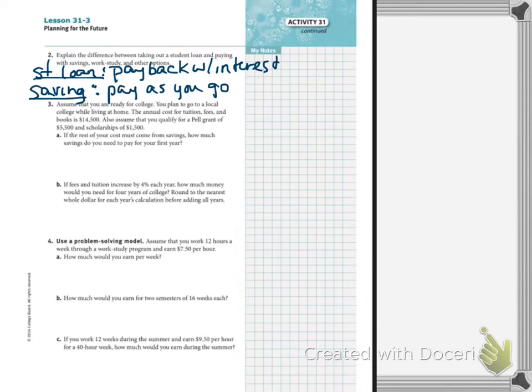Assume you are ready for college. You plan to go to a local college while living at home. The annual cost for tuition, fees, and books, oh my goodness, this is a lot of money, $14,500. Assume you qualify for a Pell Grant of $5,500 and a scholarship of $1,500. Those are very good. You do not have to pay them back. If the rest of your costs come from your savings, how much savings do you need to pay for your first year?